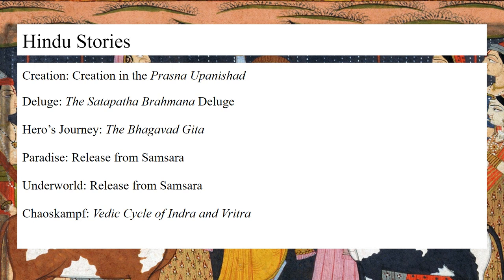The hero's journey can be found through the Bhagavad Gita, which follows the warrior Arjuna, who is counseled by Krishna — an avatar of Vishnu — before the battle of two warring clans, with Arjuna taking on the hero motif and Krishna taking on a teacher motif, which we'll analyze later in the video.